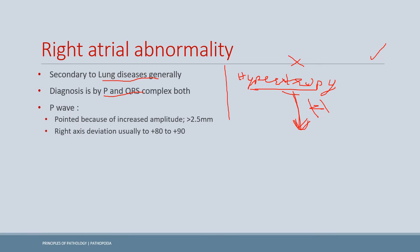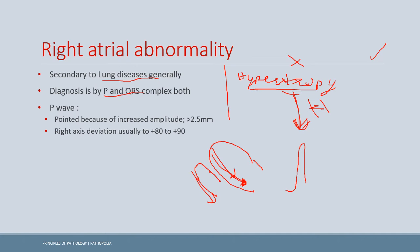In right atrial abnormality, the P wave is pointed and has increased amplitude. This is because when the right atrial wall is enlarged, the dipole is greater in length — and since dipole length is directly proportional to dipole moment, a greater dipole moment produces a more positive deflection in Lead II and the chest leads.